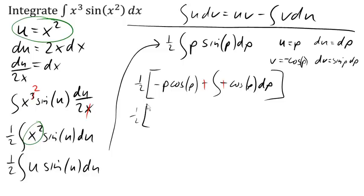That's always the goal here. So now we ask, do I know what function gives me a derivative of cosine? The answer is sine. And there we go.